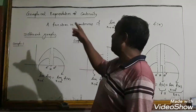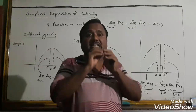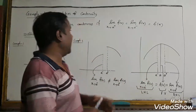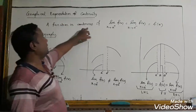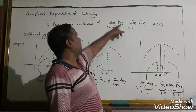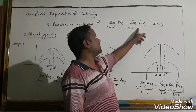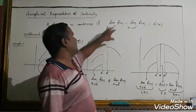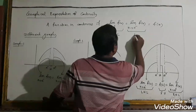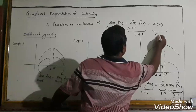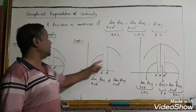Now I will discuss the graphical representation of continuity — the pictorial representation. The definition of continuity: a function is continuous at x = a if the right-hand limit equals the left-hand limit equals f(a). That means: limit as x→a⁺ = limit as x→a⁻ = f(a). When all three are equal, the function is continuous.